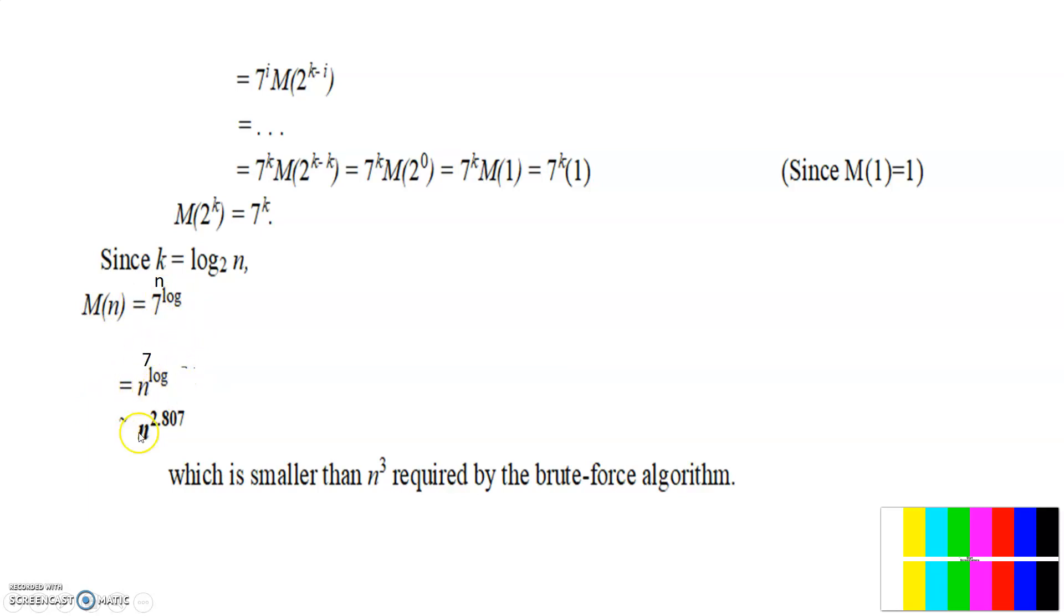If you find the log 7 value, you will get the value that is M of N equal to N to the power of 2.807, which is less than N to the power of 3. So this is how actually Strassen's matrix multiplication works. Thank you.